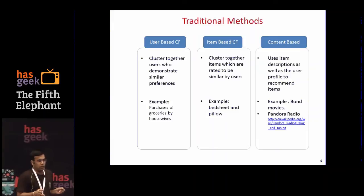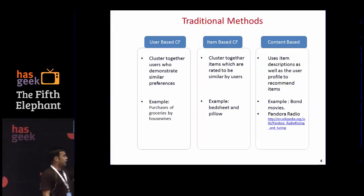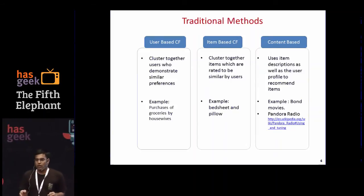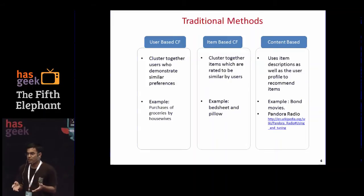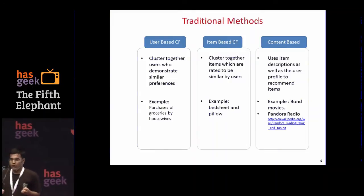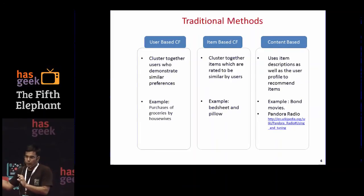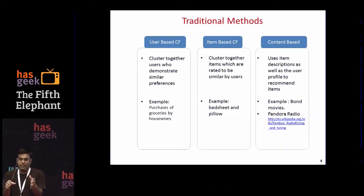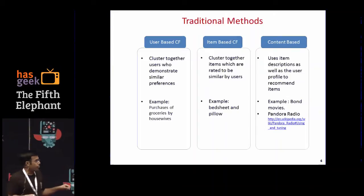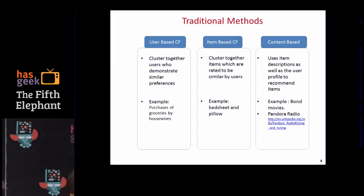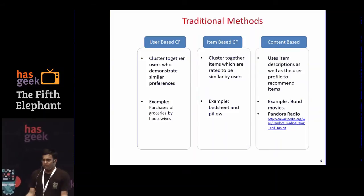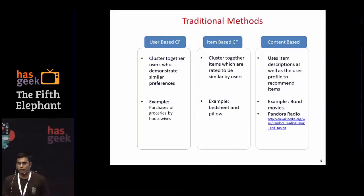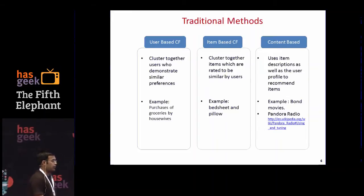Collaborative filtering is all about similarity — user similarity. For user-based collaborative filtering, it's all about clustering users who are similar to each other. You cluster users, and if I haven't bought any product that other users in my cluster have bought, you recommend that product to me. Likewise, for item-based: you cluster all the items, and if I have purchased a good number of items in the cluster, you recommend other items in the cluster not yet bought. For example, groceries are very common in nature — if you miss a few items purchased by other households, you can recommend them. Whereas something like a bed sheet and pillow go together.